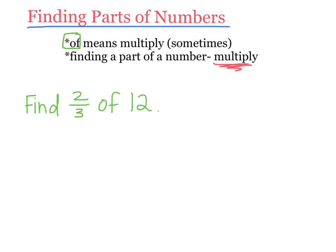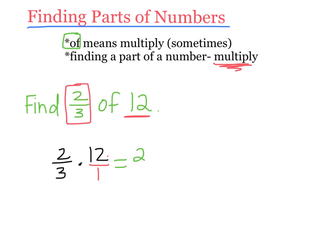Let me show you an example. Find 2 thirds of 12. It says find 2 thirds — that's a fraction, a part of this number. So one way is to just multiply: 2 thirds times 12, putting a 1 under the 12. I go straight across: 2 times 12 is 24, and 3 times 1 is 3. Then remember this line means divide: 24 divided by 3 equals 8. So 2 thirds of 12 equals 8.